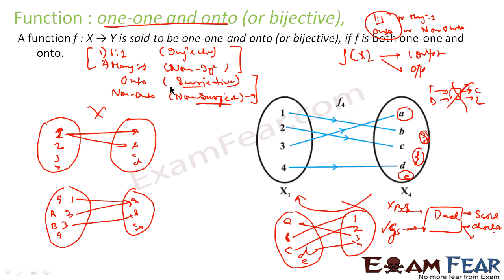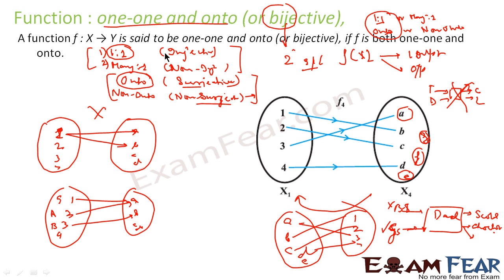So a function is classified as one-to-one or many-to-one, and as onto or non-onto. We saw that if the function is one-to-one and onto both, it has the special property of being invertible, and that kind of function is called bijective. Memory tip: 'bi' means two — so bijective has two special properties, which are one-to-one and onto. Other combinations don't have this special meaning, so only this combination is called bijective.